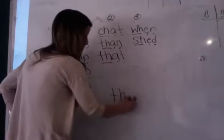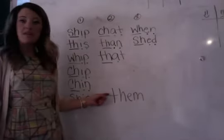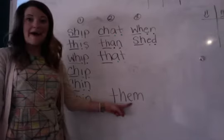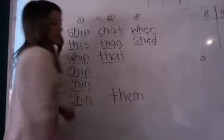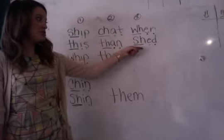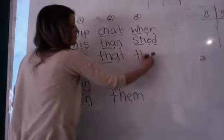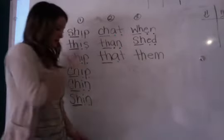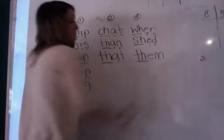We have one more word for today, and this is the word them. Say them. Now let's say the sounds for them: Th, E, M — them. What does this vowel say? E — very good, just like in when and shed. Say and write them under column three: Th, E, M — them. And dot and dash one more time with me: Th, E, M — them.